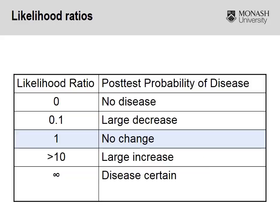You can tell a lot about likelihood ratios just by looking at their values. If you've got a likelihood ratio of one, it's basically telling us that the test is useless — similar to an odds ratio or relative risk of one, indicating no change, no difference. Positive likelihood ratios approaching 10 or above result in a large increase in the probability that someone does have the condition when they test positive. So we're trying to utilise tests that have a large positive likelihood ratio above 10.